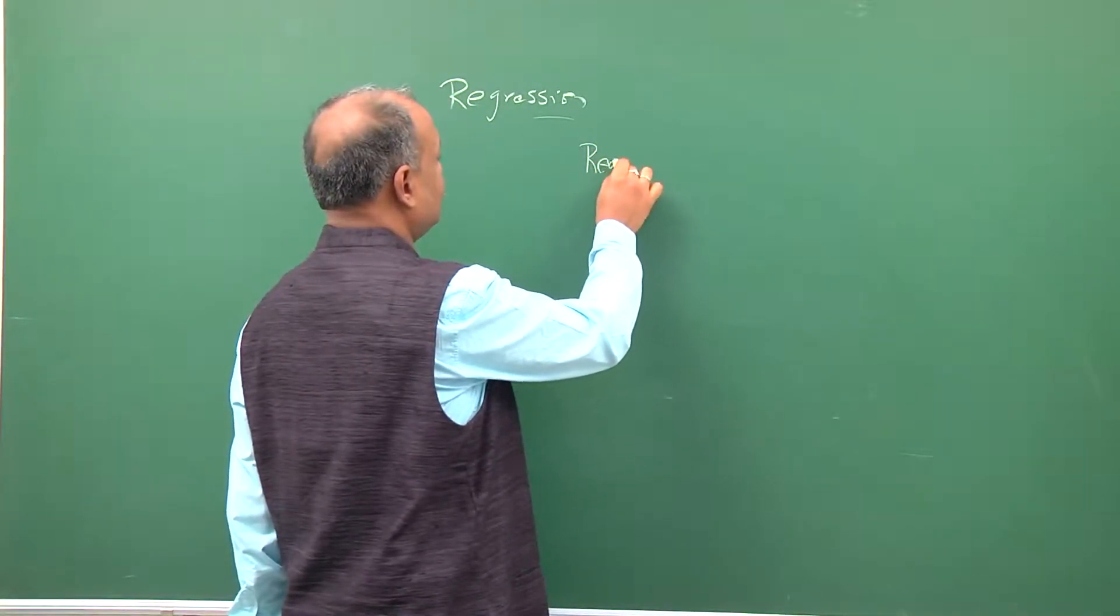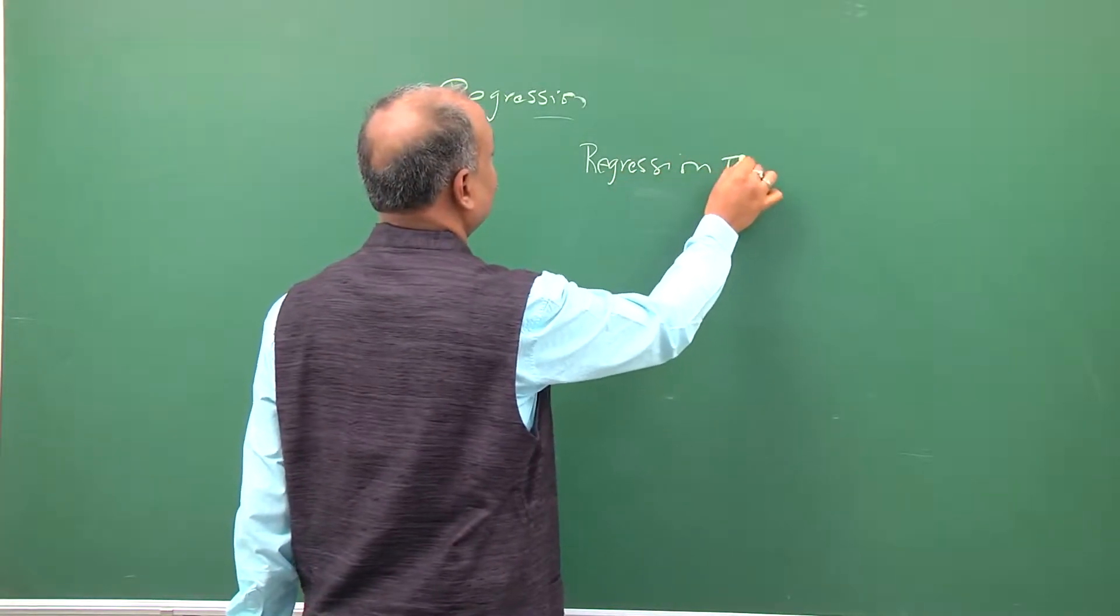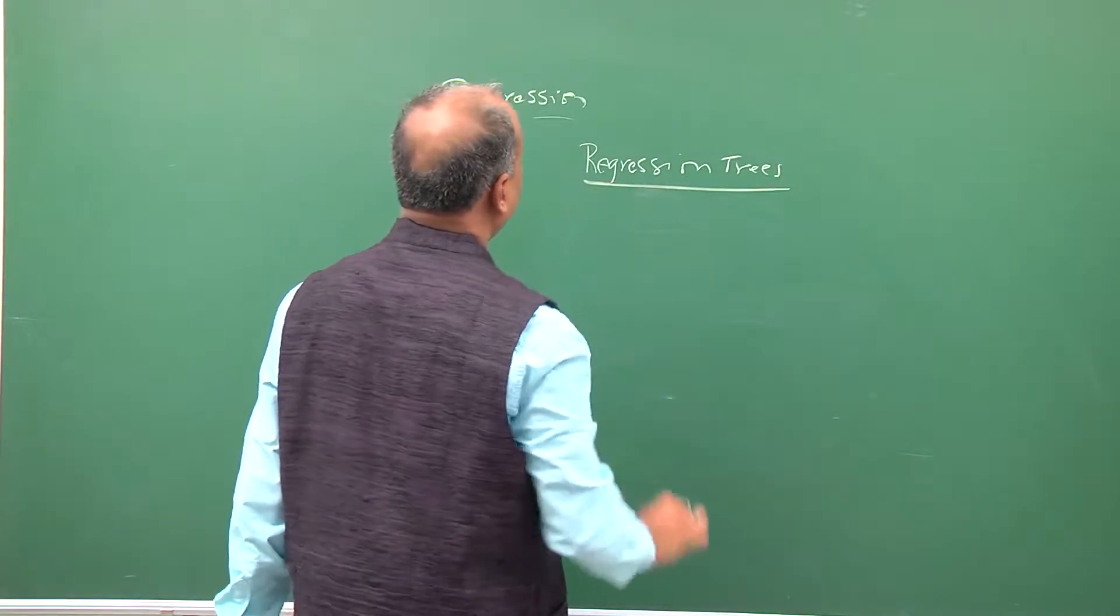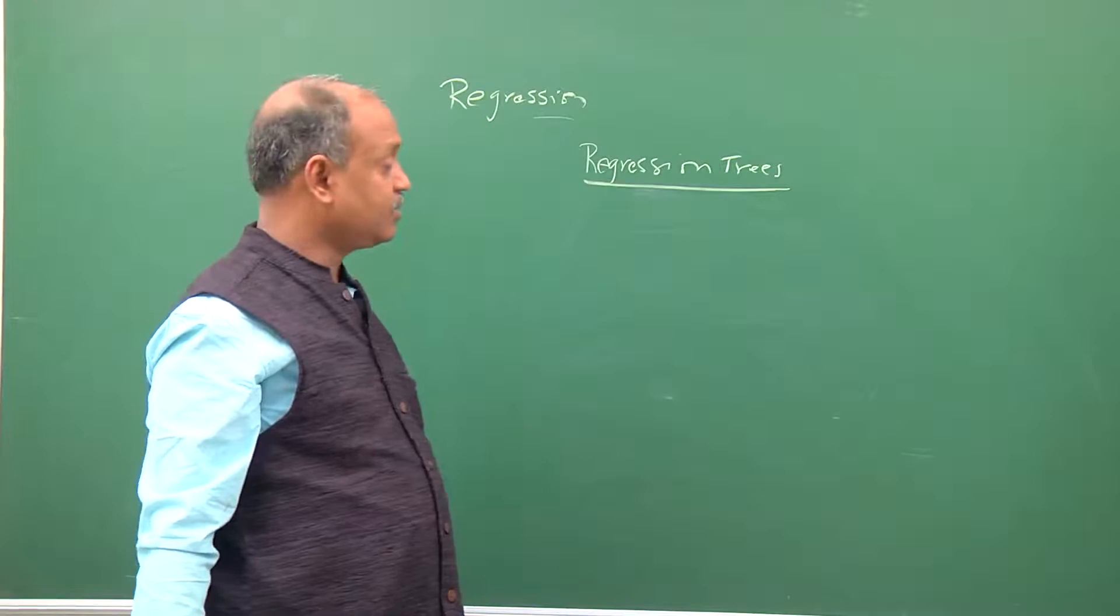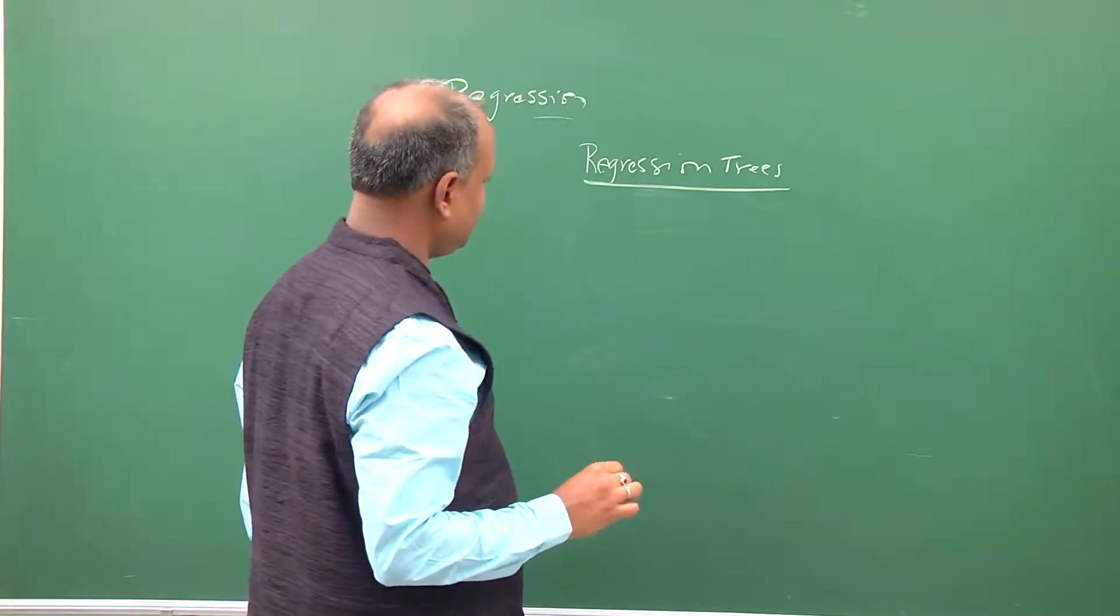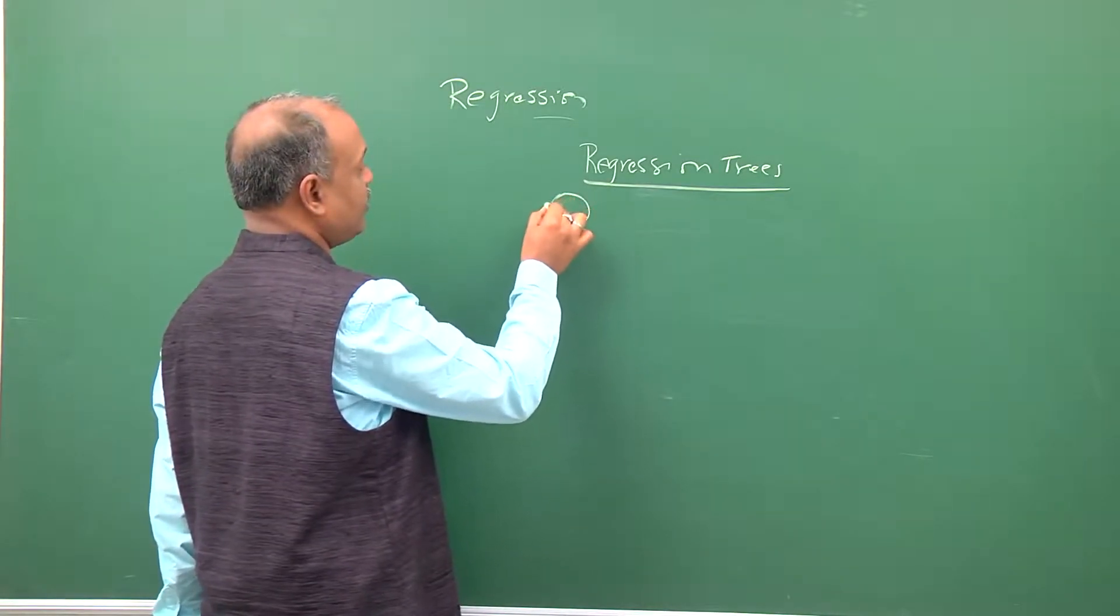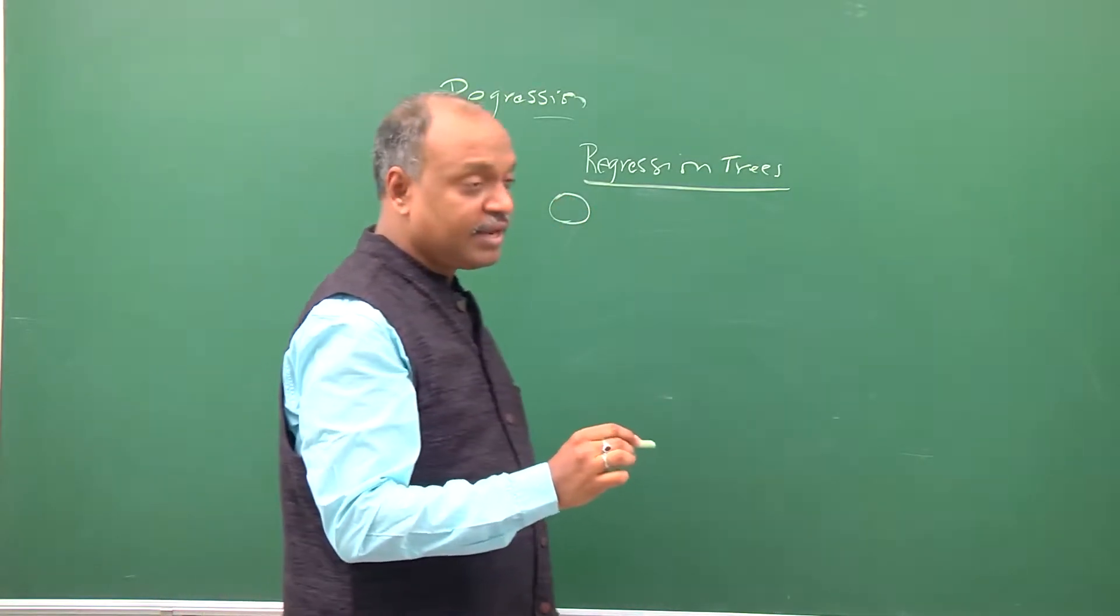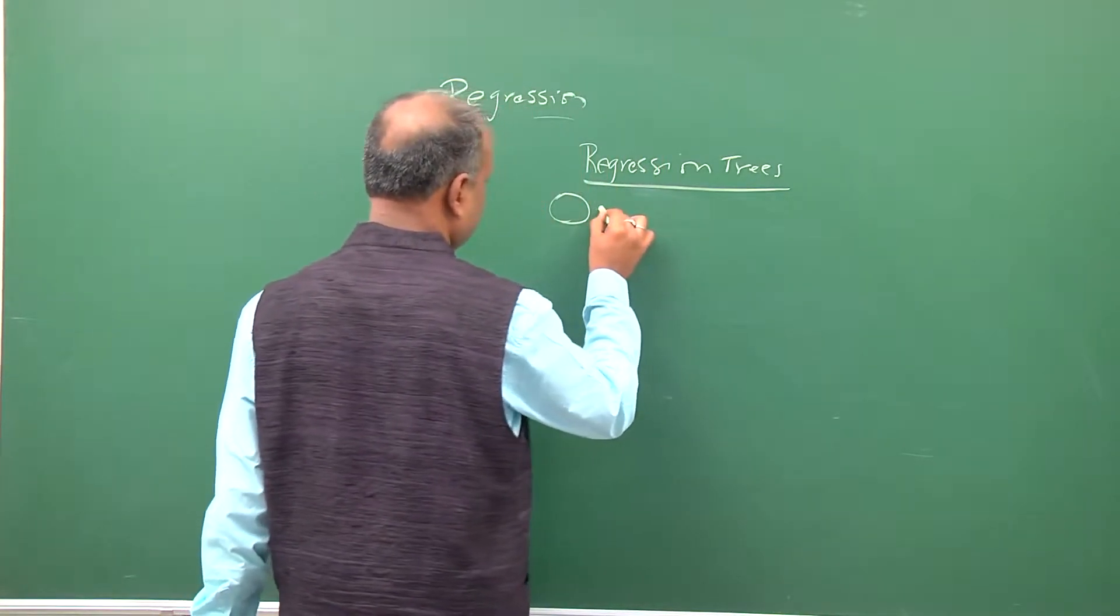A class of algorithms contemporary to classification trees, in context of regression trees. Regression trees is just like classification trees. The basic difference being that at the leaf node instead of having one specific class you will typically have a range of values.